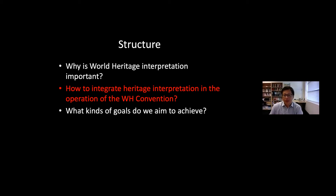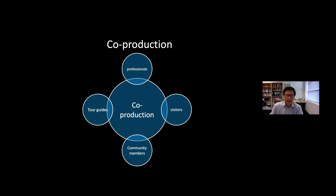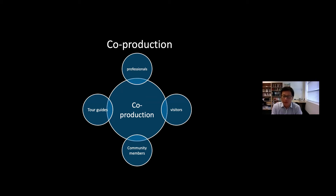I argue that heritage interpretation should not be driven only by professionals and experts. Instead, heritage interpretation can be treated as a form of co-production. By co-production, I mean all stakeholders of heritage sites, especially communities, should be integrated as part of the interpretation process to provide equitable and ethical identification of certain rights and freedoms. The key issue of co-production is that heritage interpretation is dialogical — it can integrate both official and unofficial narratives in the production of heritage meaning and values.